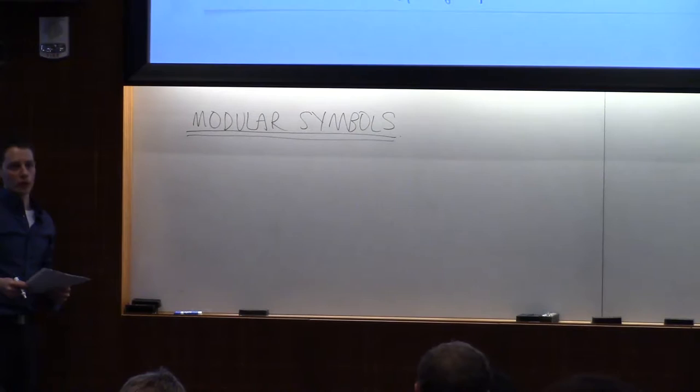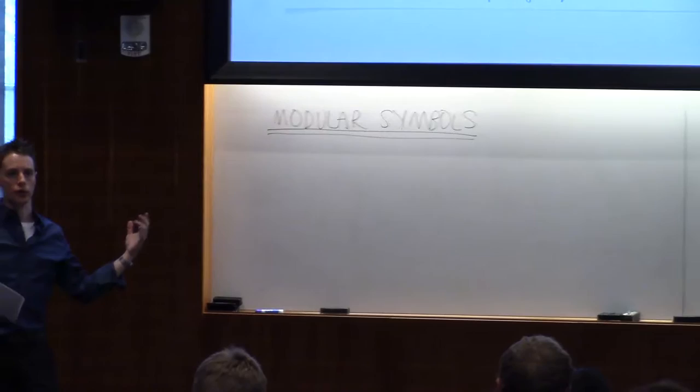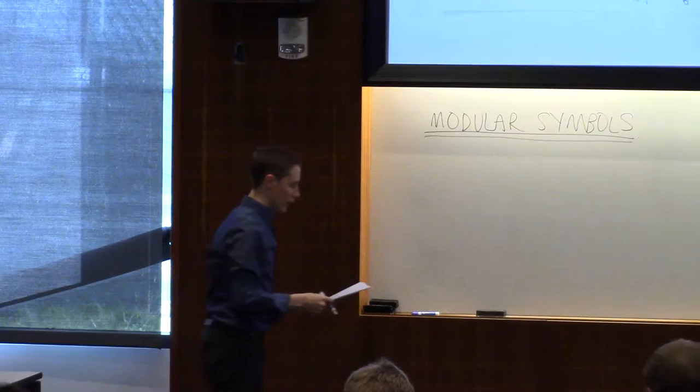So we already saw how important it was to keep track of paths in the upper half plane as a way of understanding discrete groups. The object which tries to keep track of those paths more than just for the fundamental domain, but with application to homology and modular forms, is something called a modular symbol. So in other words, we're going to keep track of the homology class of these paths. They're not strictly speaking homology yet, because we don't know that they map up to loops, but they're homology relative to the cusps.